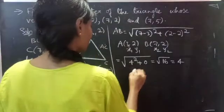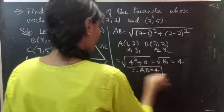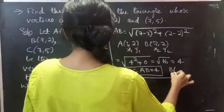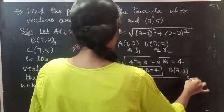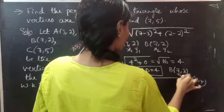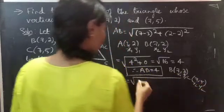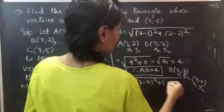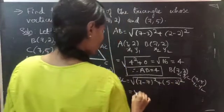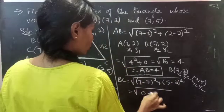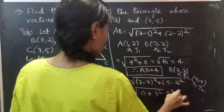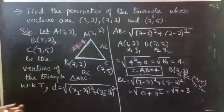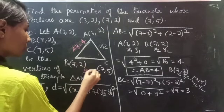Now we will find BC. BC equals square root of (7 minus 7) whole square plus (5 minus 2) whole square, where B is (7, 2) and C is (7, 5). This equals square root of 0 plus 3 squared, which is square root of 9, so BC equals 3.